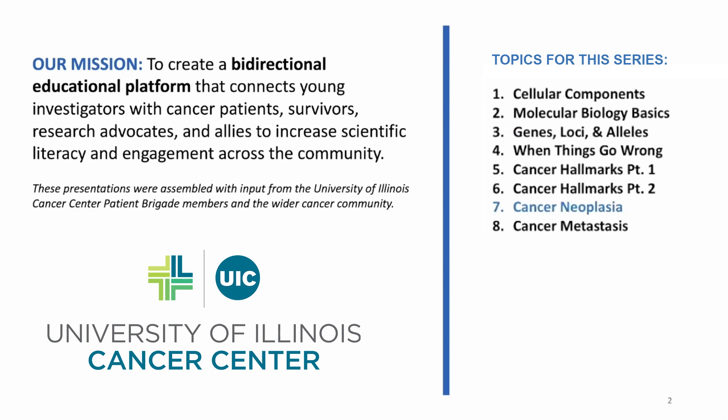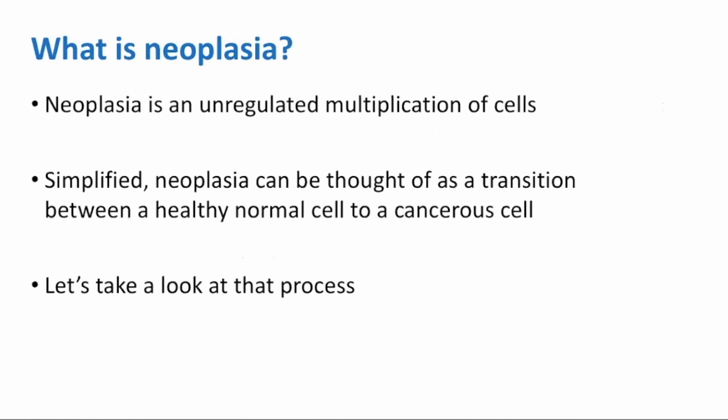This is video number 7, Cancer Neoplasia. Neoplasia is an unregulated multiplication of cells. A simplified way to think of neoplasia is almost like the transition between a normal healthy cell to a cancerous cell. This video will cover that transition process.